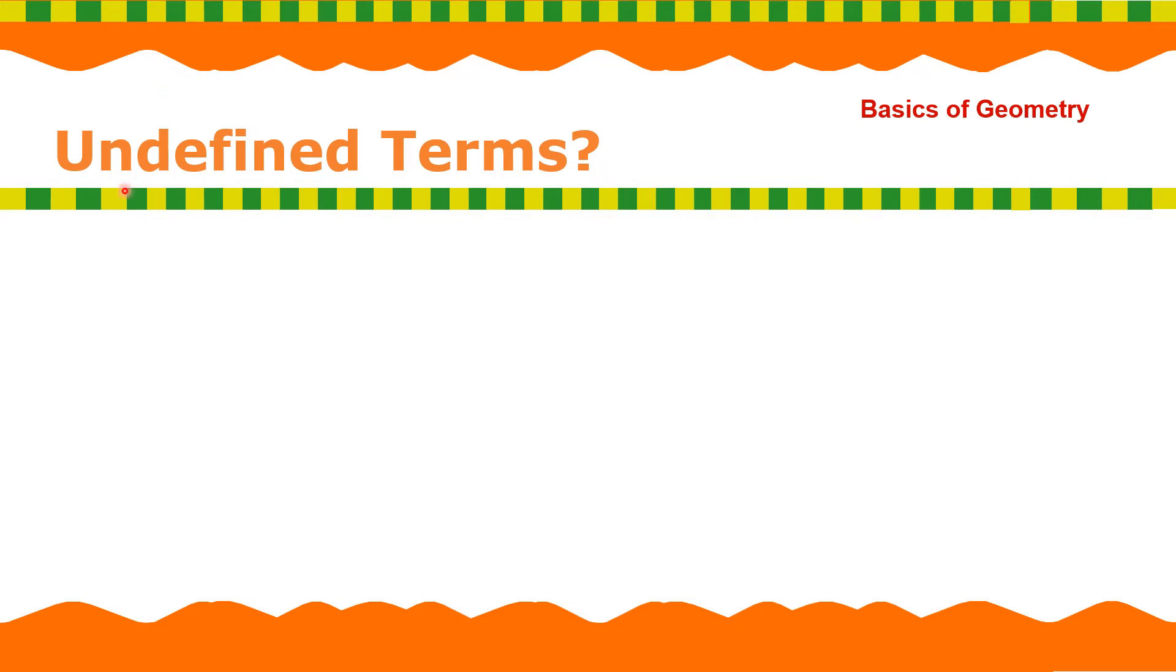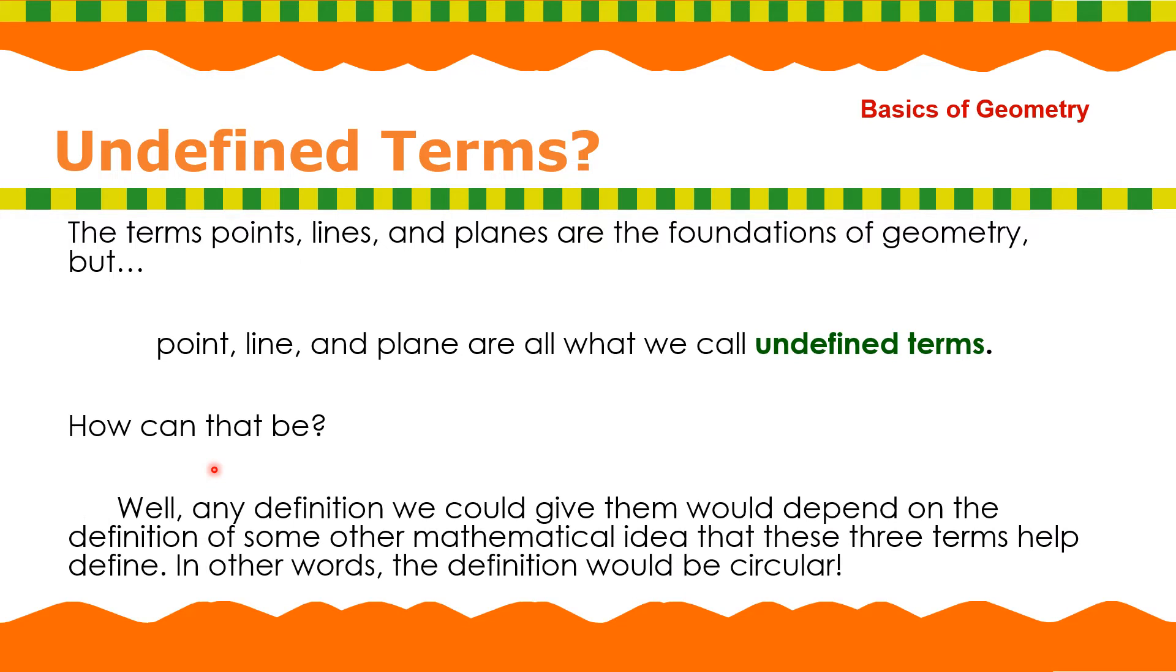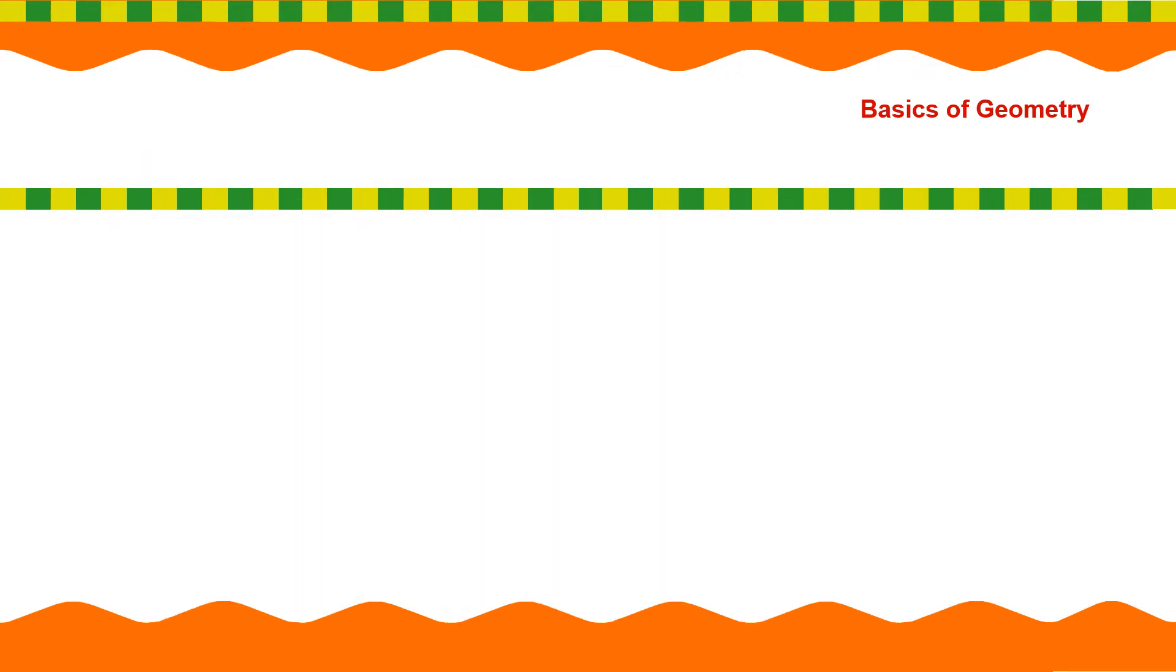Undefined terms. The terms points, lines, and planes are the foundations of geometry. But point, line, and plane are all what we call undefined terms. How can that be? Well, any definition we could give them would depend on the definition of some other metaphorical idea that these three terms help define. In other words, the definition would be circular.